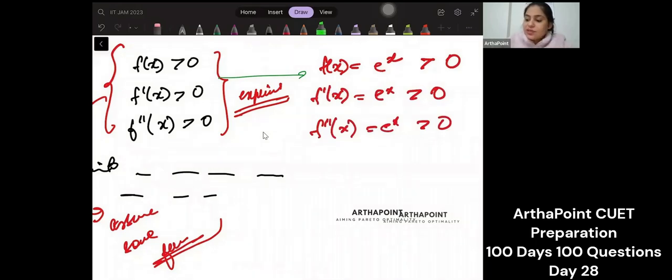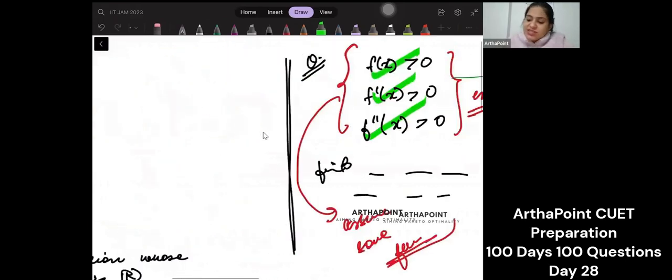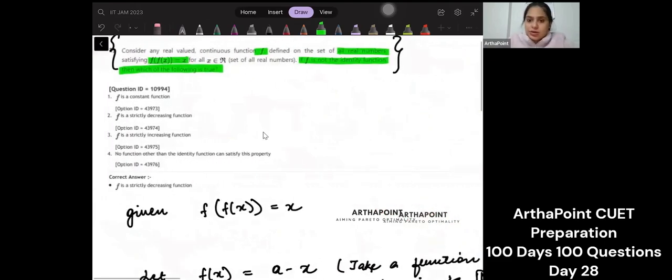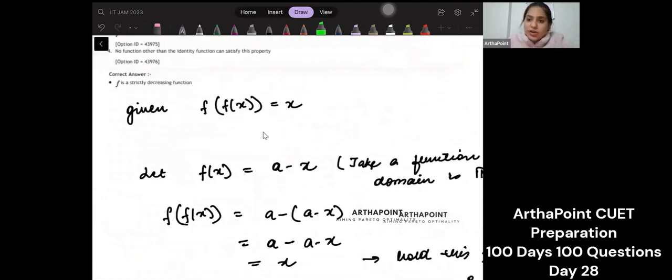So sometimes they will give you some properties of the function, but you can only solve that question by assuming some function and not directly. Very similar thing is happening here. Let's have a look. I have gone ahead and I have taken my function to be a minus x.